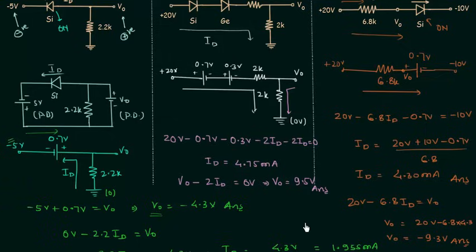So this is all for this lecture. If you have any doubt, you may ask in the comment section. In the next lecture we will start series-parallel configurations of PN junction diode. See you in the next presentation.